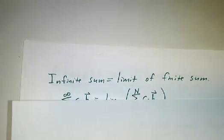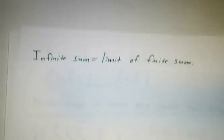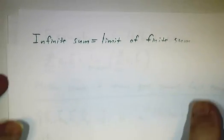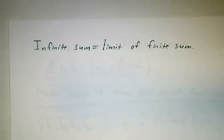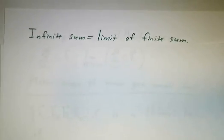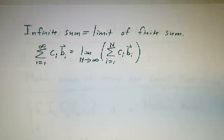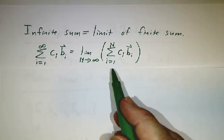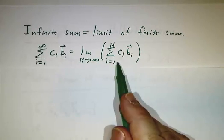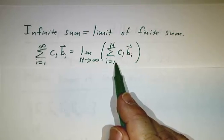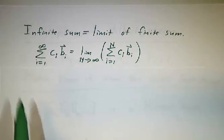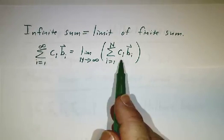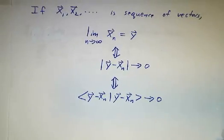Once we know what convergence means, we know how to take infinite sums. Because just like with numbers, an infinite sum is by definition the limit of a finite sum as you take more and more terms. We don't know how to add up an infinite number of vectors. We know how to add up n vectors and then see what happens as we take more and more terms. So an infinite sum is by definition the limit of a finite sum and limit is defined by the inner product.